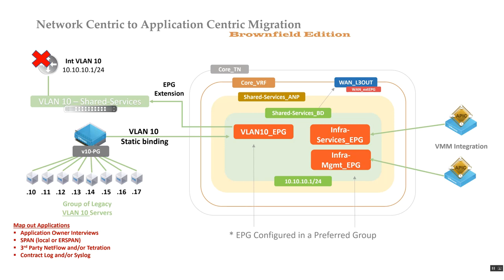VMM integration can definitely assist in moving to an application-centric model because you don't have to manage all the different VLAN ID mappings for port groups manually. You're relieving the VMware administration team from managing all these port groups now that you have new security initiatives. With VMM integration or manual VMware-layer mapping, we'd have the infra services EPG and the infra management EPG.